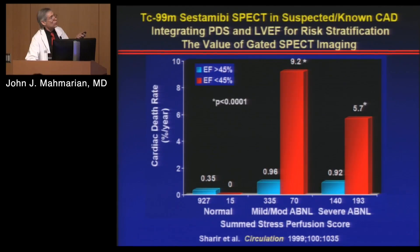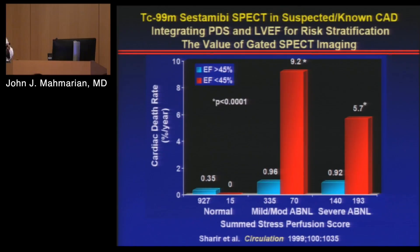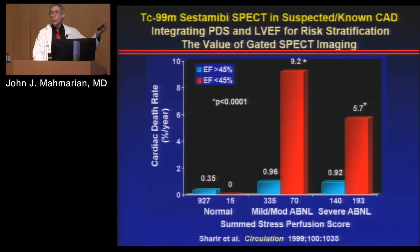Ejection fraction also has a very important role. People with a normal myocardial perfusion scan and a relatively preserved ejection fraction all do well. But in people with mild to moderate or severe defects who also have a depressed ejection fraction, risk goes up dramatically. The combination of knowing perfusion results plus gated SPECT ejection fraction results is extremely important for stratifying low and high risk individuals — and we have both pieces of information available when we do gated myocardial perfusion imaging.